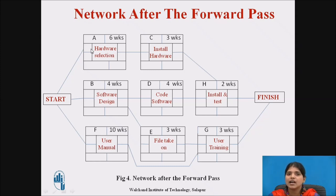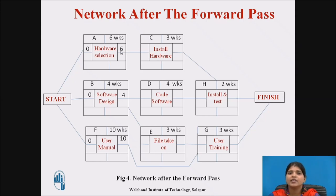The forward pass is used to calculate the earliest start and earliest finish dates. Activities A, B, and F are immediate activities, so write zero as their earliest start. Then calculate the earliest finish: earliest start plus duration. For A: 0 + 6 = 6. For B: 0 + 4 = 4. For F: 0 + 10 = 10. For C, the predecessor A finishes at 6, so earliest start = 6; earliest finish = 6 + 3 = 9. For D, predecessor B finishes at 4; earliest finish = 4 + 4 = 8.